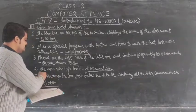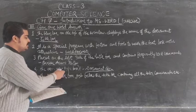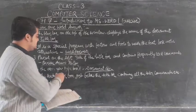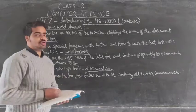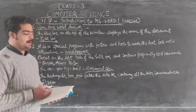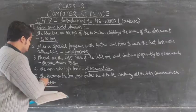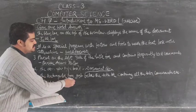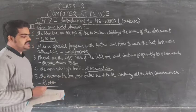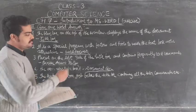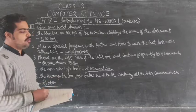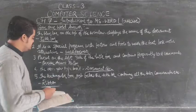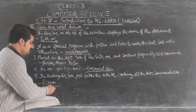The fourth one — the area where you type the text — the answer is the document area. The rectangular box just below the title bar containing all the tabs and commands is called the ribbon.